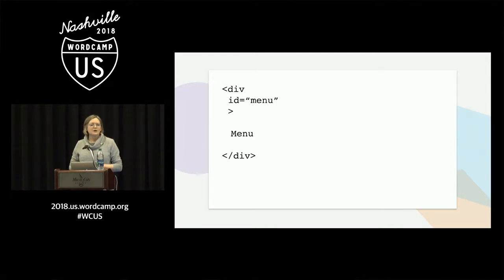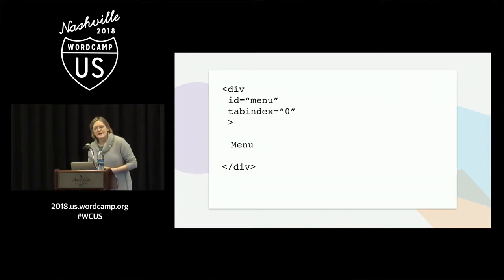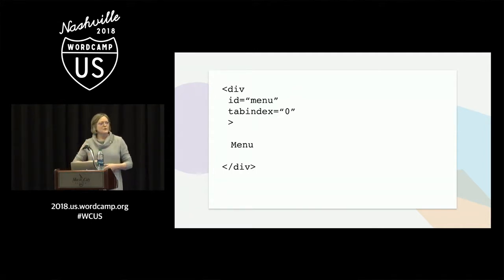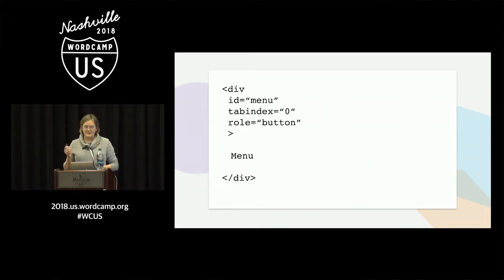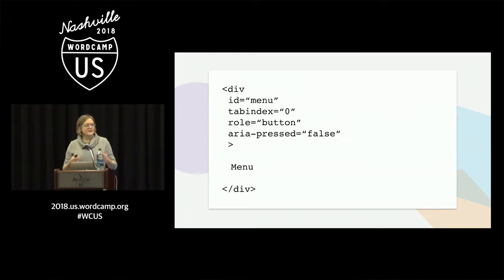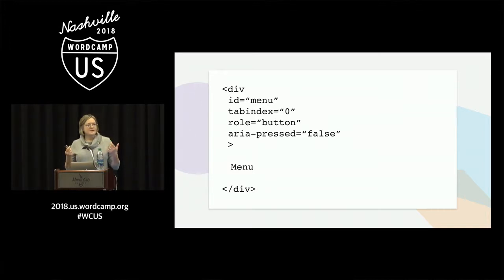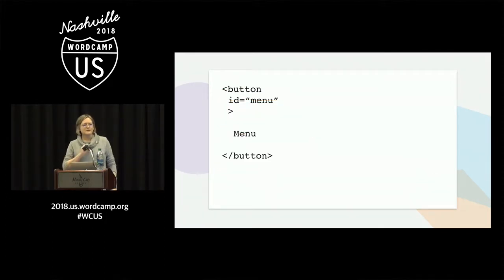Then somebody tells you it also has to be accessible, operable with a keyboard. You go testing, and the div is skipped — a div doesn't get keyboard focus. So you add tabindex zero, it gets keyboard focus, but the JavaScript isn't fired. Then you throw in a bunch of ARIA: role button, aria-pressed true or false. And then it actually works. But actually HTML5 has this wonderful element called button. So don't use the div approach — use a button, because then you get all the functionality for free.